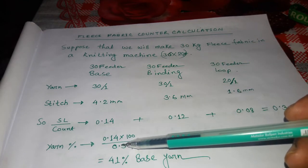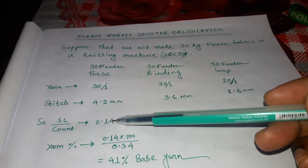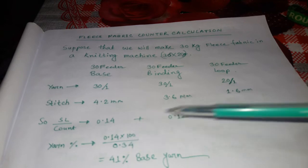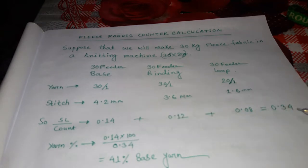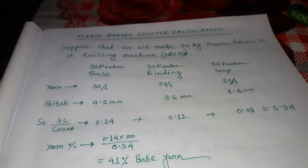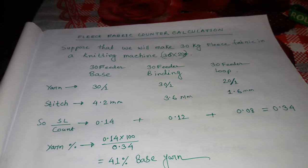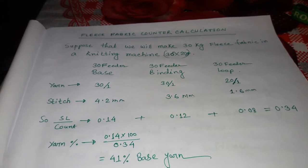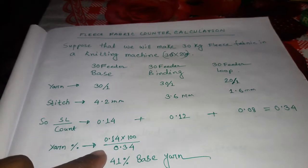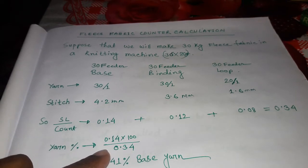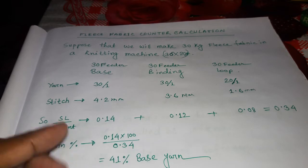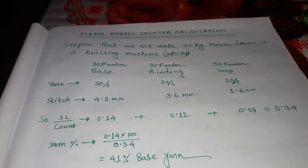Now we calculate the base yarn percentage. Base yarn percentage = 0.14 × 100 divided by the total ratio (0.34), which gives 41%. We have calculated only the base yarn percentage because when we run a knitting machine — if it is a flat finish machine — when base yarn is feeding, binding and loop yarn are also feeding.